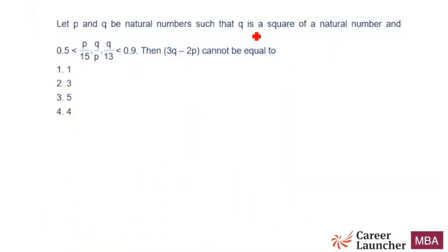Let P and Q be natural numbers such that Q is a square of a natural number and these three quantities lie between 0.5 and 0.9. What does this mean? It means P/15 is between 0.5 and 0.9, Q/P is between 0.5 and 0.9, and P/13 is also between 0.5 and 0.9. This is what it means.